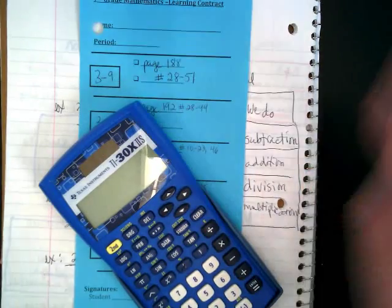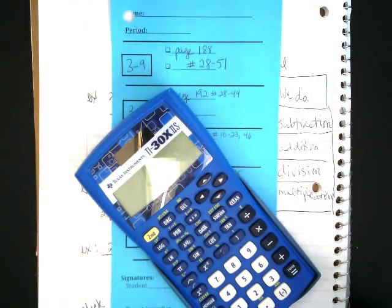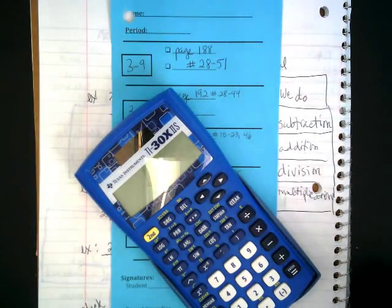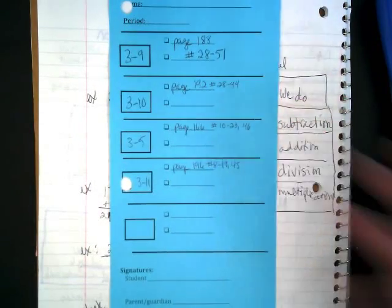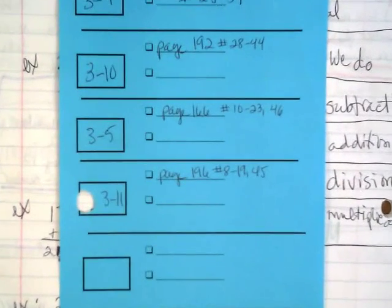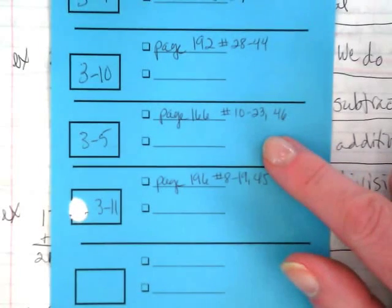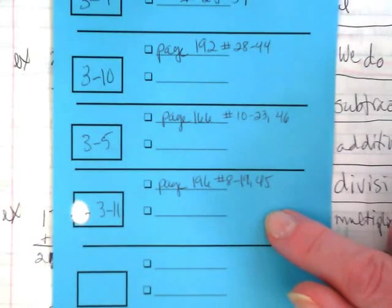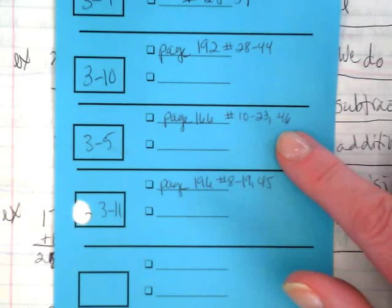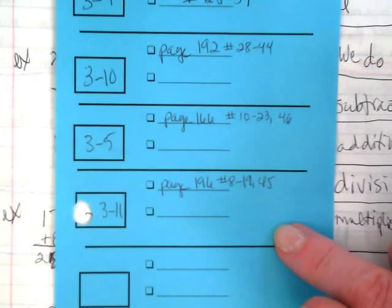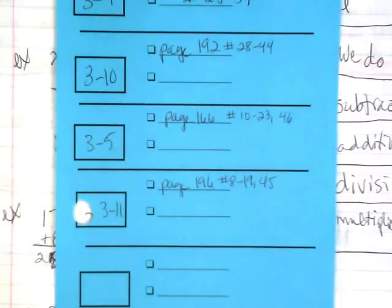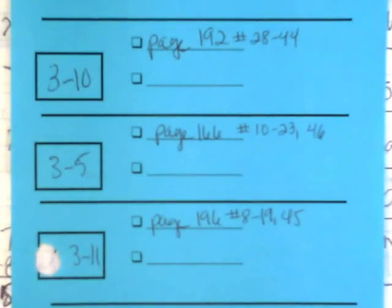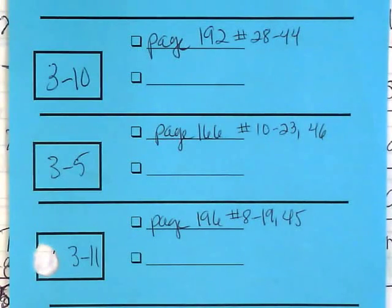Okay, so we're going to be using calculators today because we're going to be solving equations with decimals. We also need to remember our positive and negative rules. On our contract, we went from 3-10 and now we're going back to 3-5. Both 3-5 and 3-11 in your book are about solving equations. 3-5 is solving equations with decimals and that's what we're working on today. Tomorrow we'll get into solving equations with fractions. Go ahead and take a moment to write the problems down here and then set your contract aside.